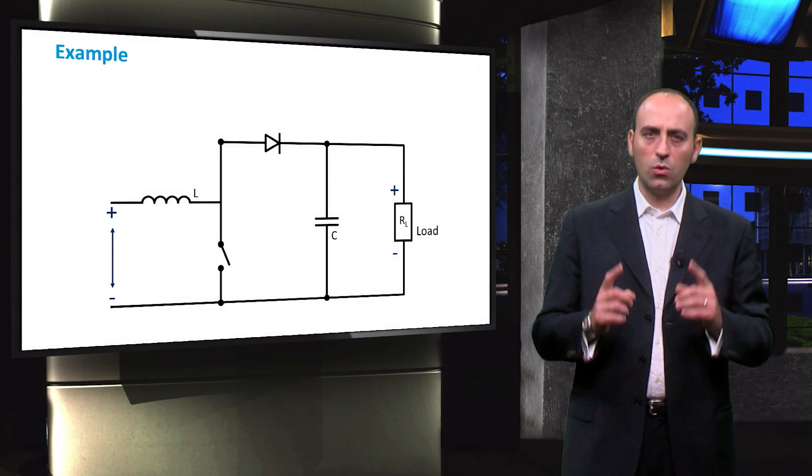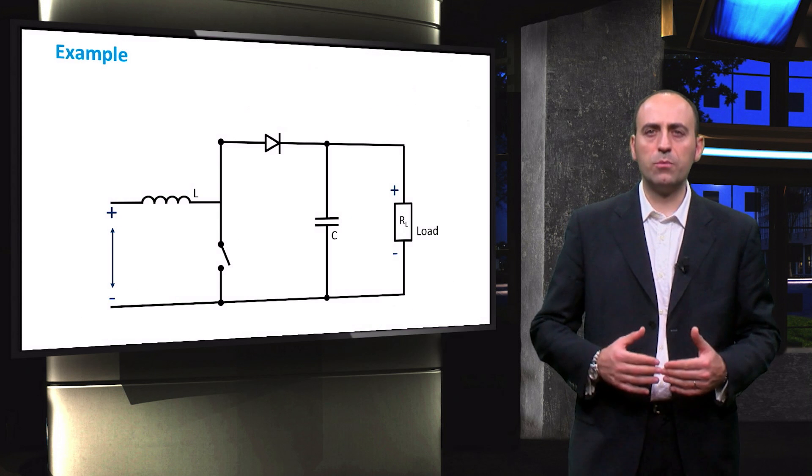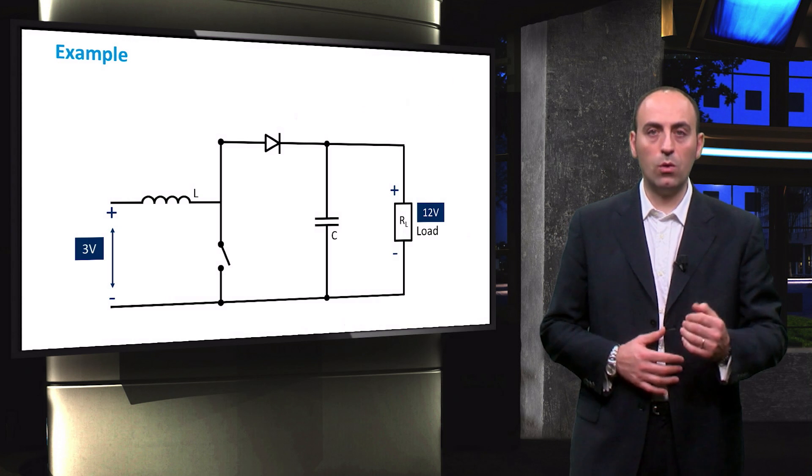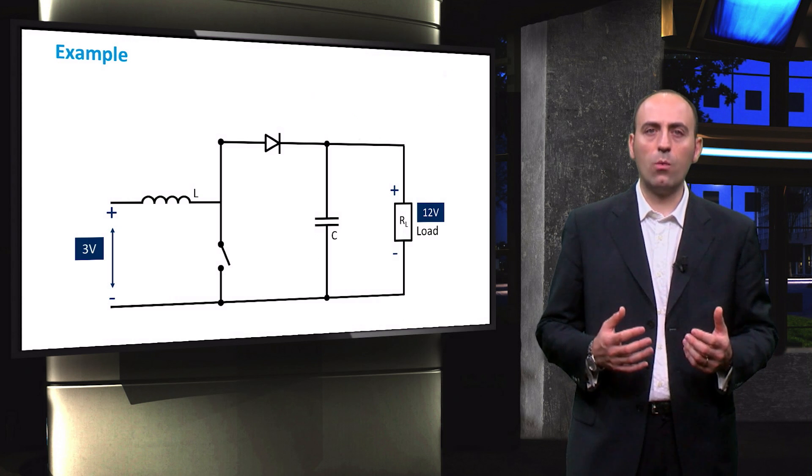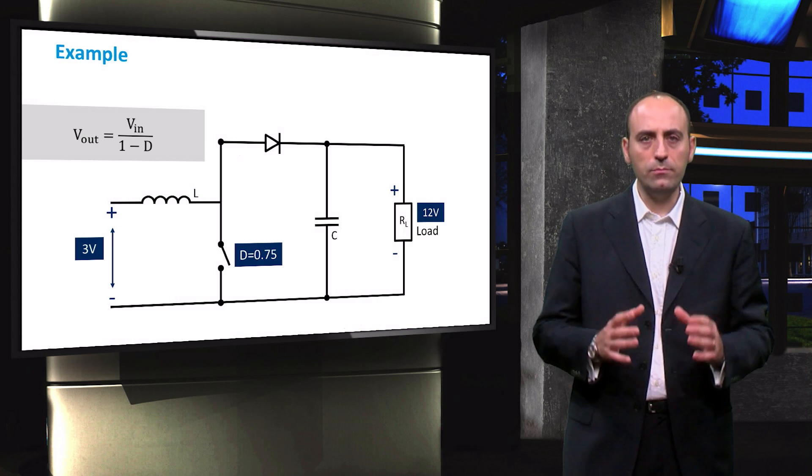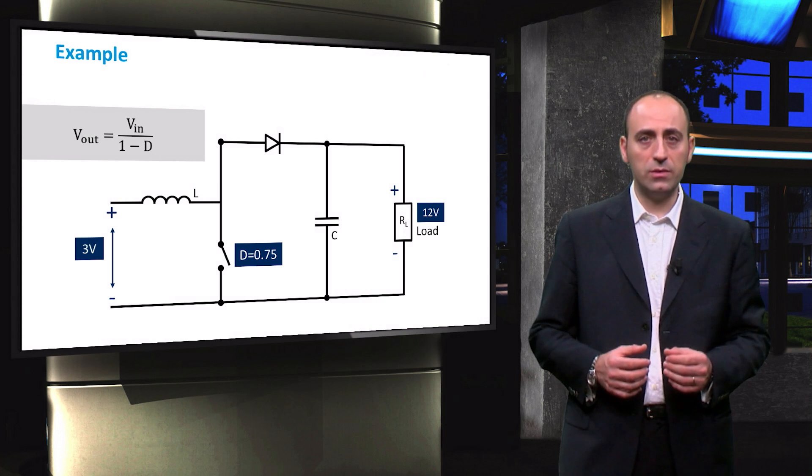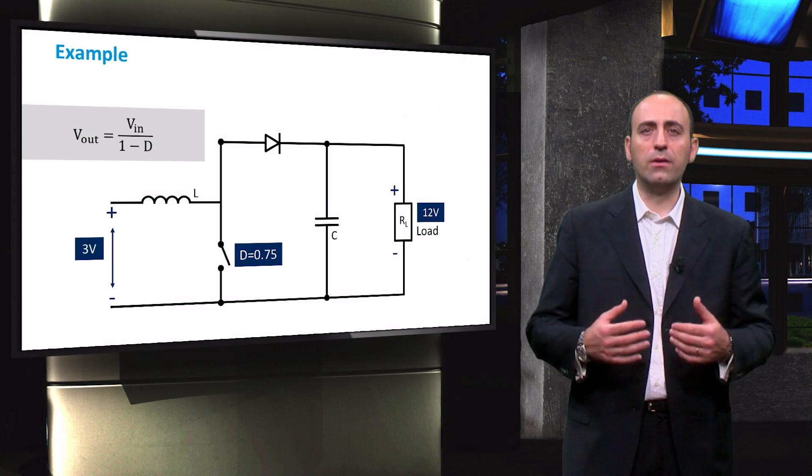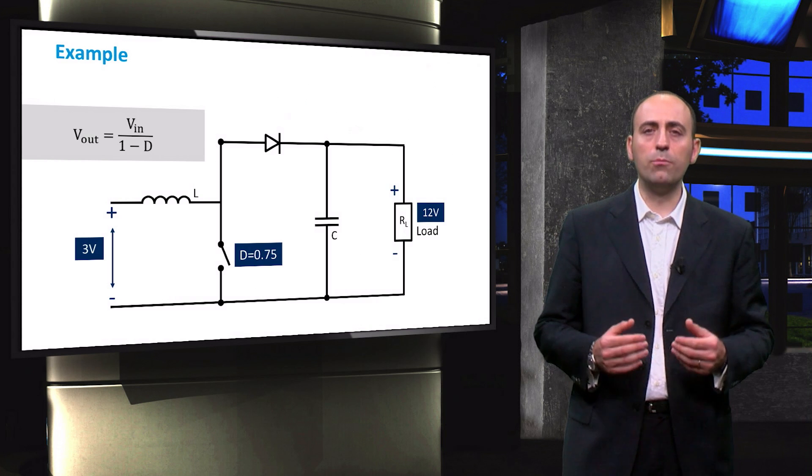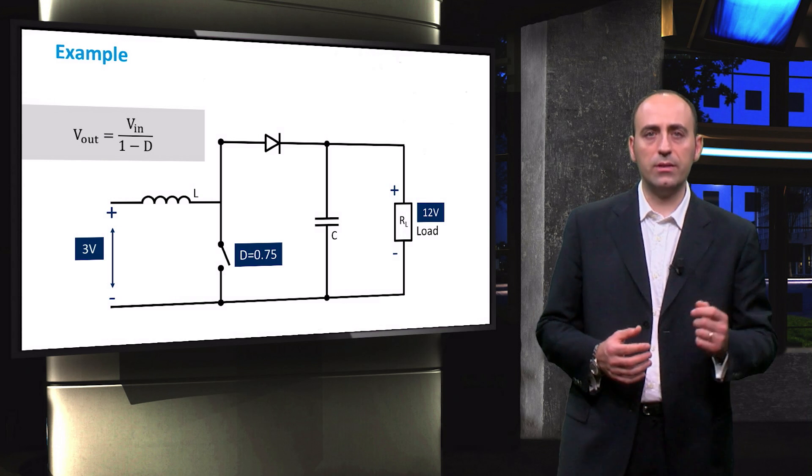As an example, if we have a shaded module producing only 3 volts and we want to supply a load requiring 12 volts, according to the equation, we need a duty cycle of 0.75. This means the switch stays on for 75% of the cycle period. In a real maximum power point tracker, the suitable duty cycle is computed according to its algorithm and sent as input to the DC-DC converter.